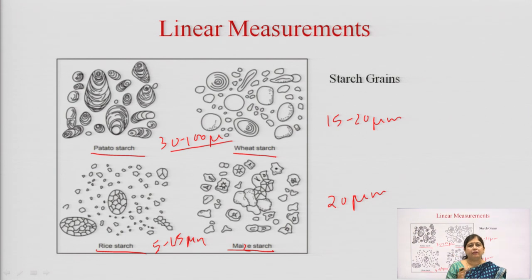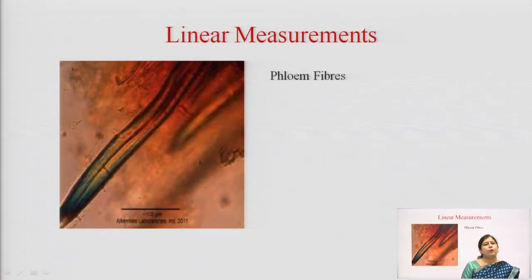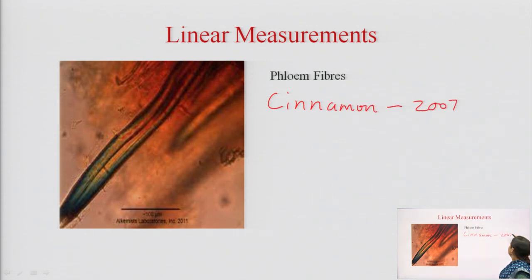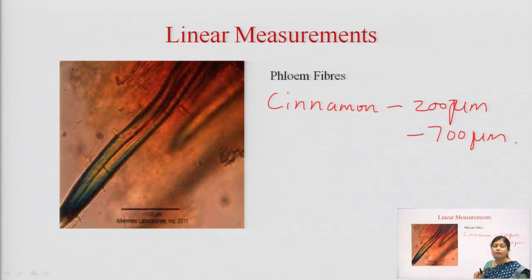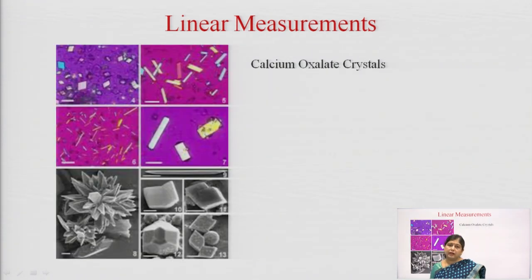Using this technique, we can identify which kind of starch a given sample is, helping in identification. Another example is phloem fibers, which are generally found in barks, stems, or roots and have a particular length. For example, in cinnamon (dal chini), the fiber length ranges from 200 to 700 micrometers. So when we get a powder of cinnamon, we can determine whether the given fiber is from cinnamon or some adulterated drug.